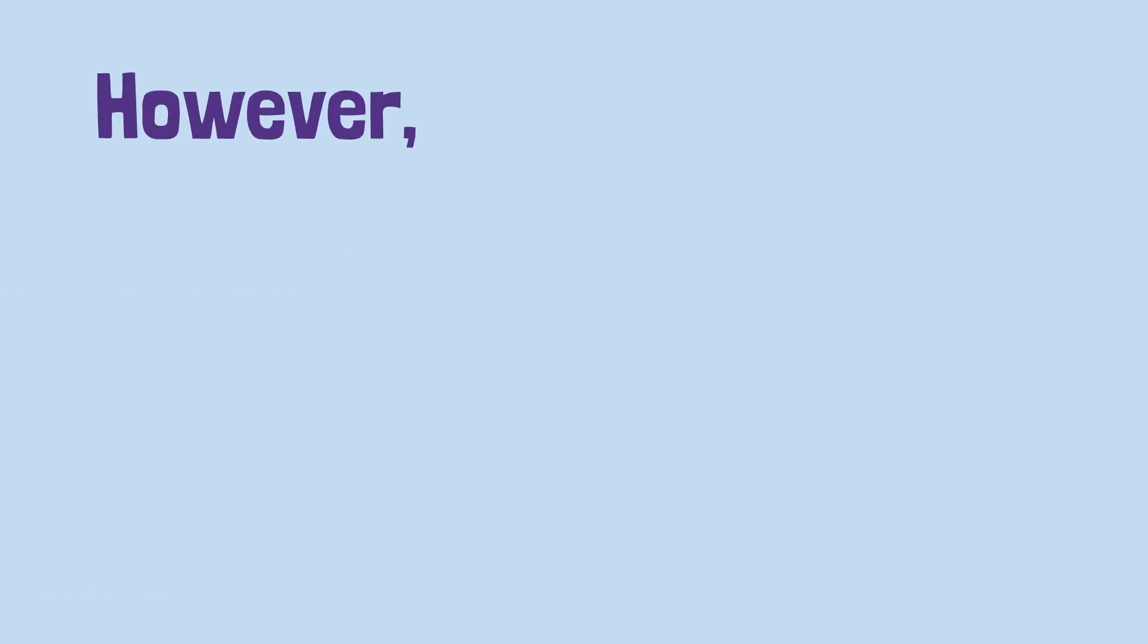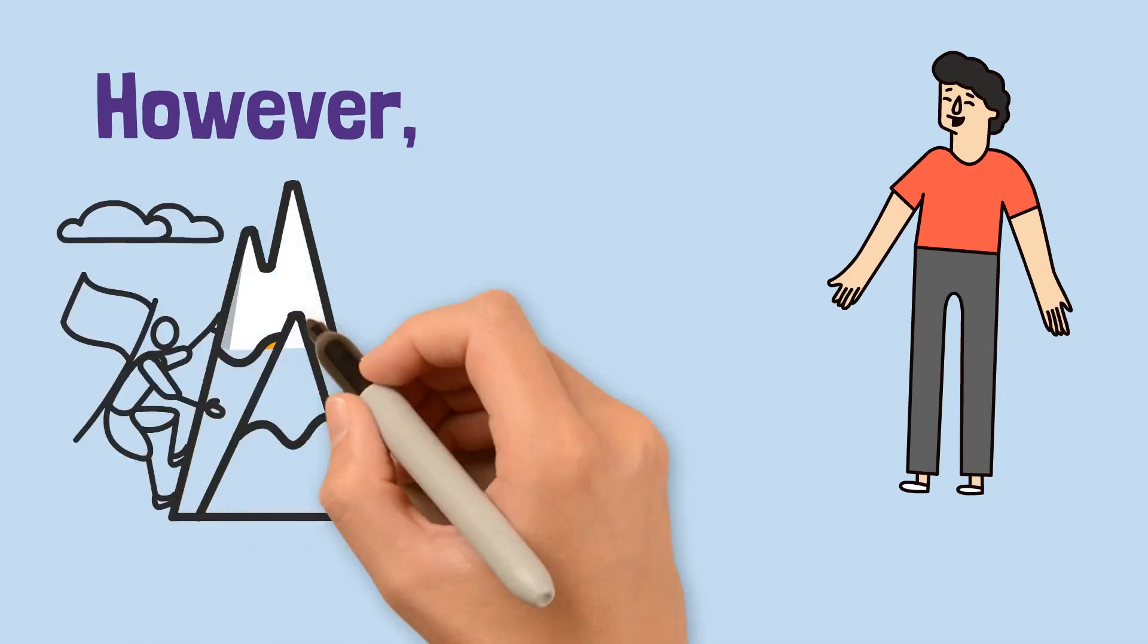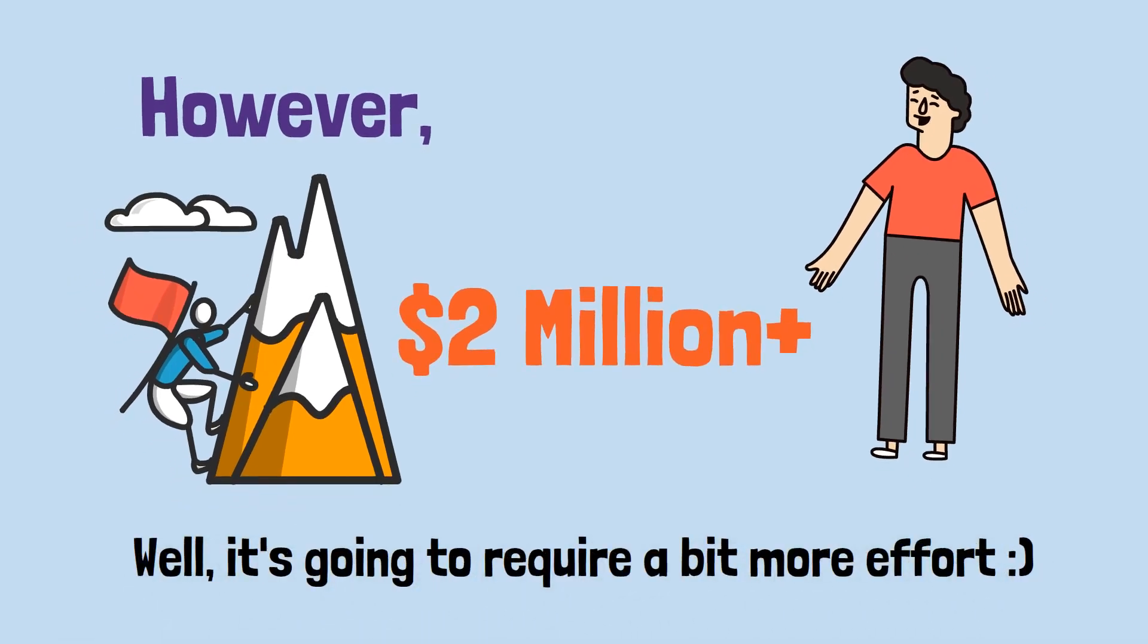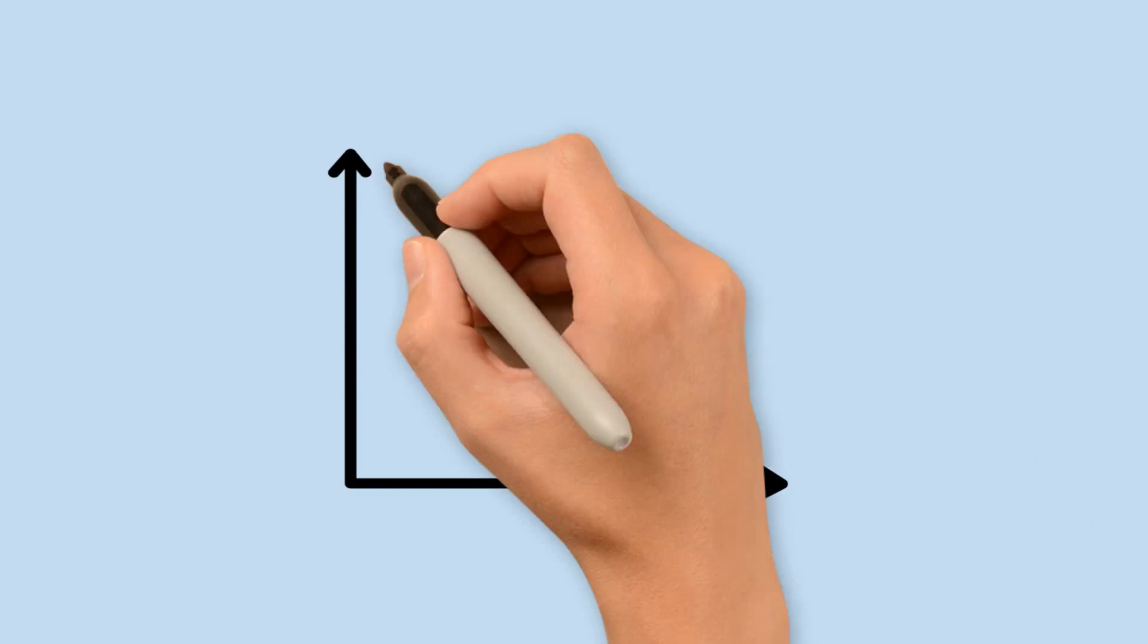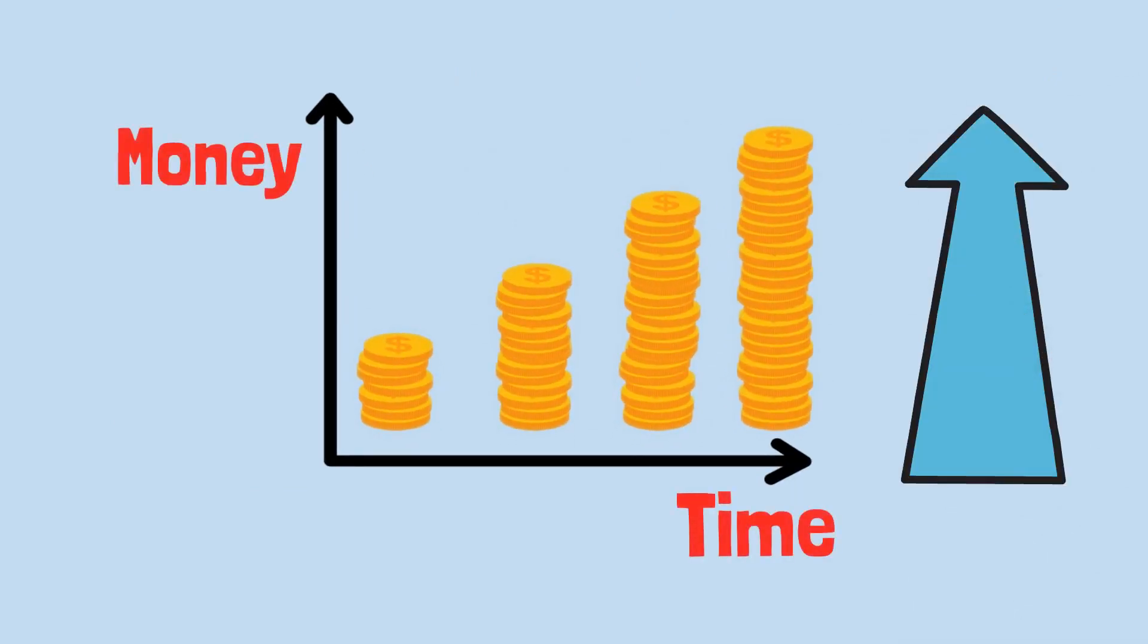However, what if you're someone who, like Liam, dreams bigger and wants to retire earlier, or even wants to retire with even more than $2 million? Well, it's going to require a little bit more effort. While compound interest can work wonders, it needs as much time and money as possible to grow.